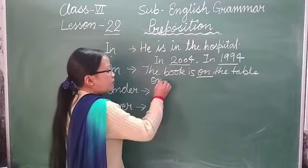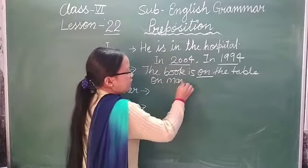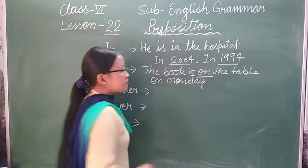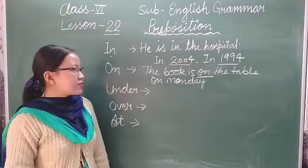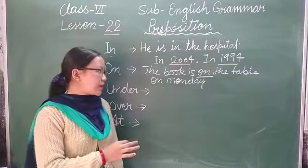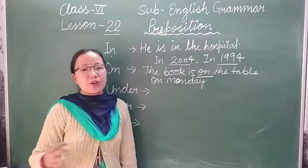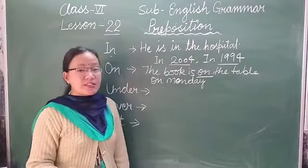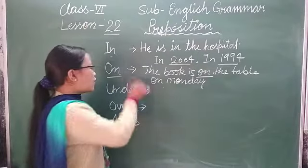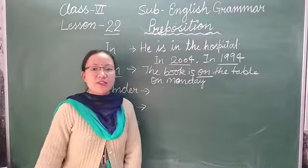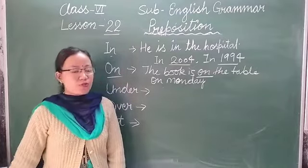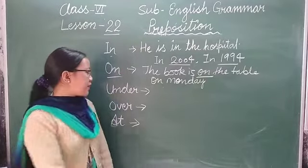Second use of 'on' is as a preposition of time — like 'on Monday', 'on Tuesday', 'on Wednesday'. When we mention a date, we also use 'on' — for example: 'On 19th September, I will go to my village.'